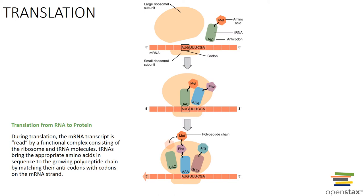Translation involves messenger RNA, transfer RNA, and ribosomal RNA. Messenger RNA attaches to a small ribosomal subunit that moves along the messenger RNA to the start codon. The large ribosomal subunit then attaches, forming a functional ribosome. The anticodon of transfer RNA binds to its complementary codon and adds the appropriate amino acid to the growing protein. New amino acids are added by other transfer RNAs as the ribosome moves along until a stop codon is reached. You can see that process shown here.